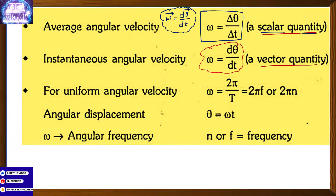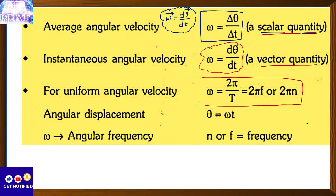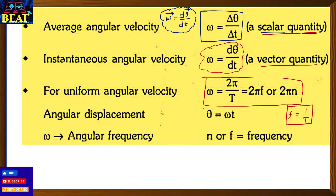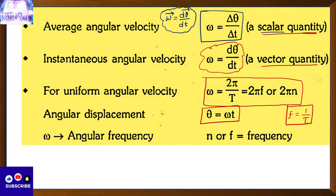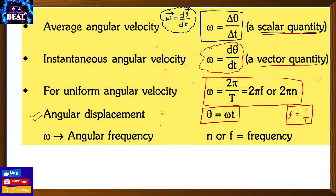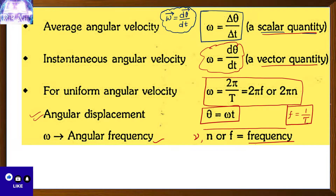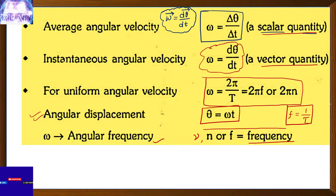Other important formulas: omega = 2π/T, and omega = 2πf. This formula is very frequently used. Also, f = 1/T. And θ = ωt (angular displacement equals angular velocity times time) — this will be very useful in SHM and waves as well. Remember that n, f, and ν all represent frequency, meaning number of revolutions in one second.